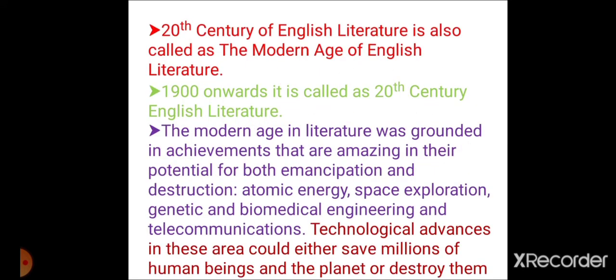The 20th century is also called as the modern literature. As we know, the modern age is the most advanced age of the previous one. So the 20th century English literature is also called as the modern age of English literature. From 1900 onwards — the period 1901 to 1999 — that period we are calling the 20th century.